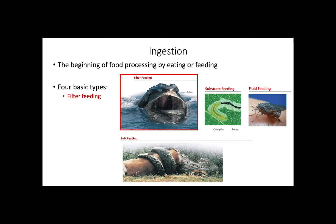Food processing begins with ingestion, which is eating or feeding. In animals, food consumption happens in one of four different mechanisms. The first is filter feeding, where animals make use of specialized hair-like structures to separate small organisms and food particles from large volumes of water. This type of feeding is common in aquatic organisms such as crustaceans, but larger animals like whales also present this type of feeding.